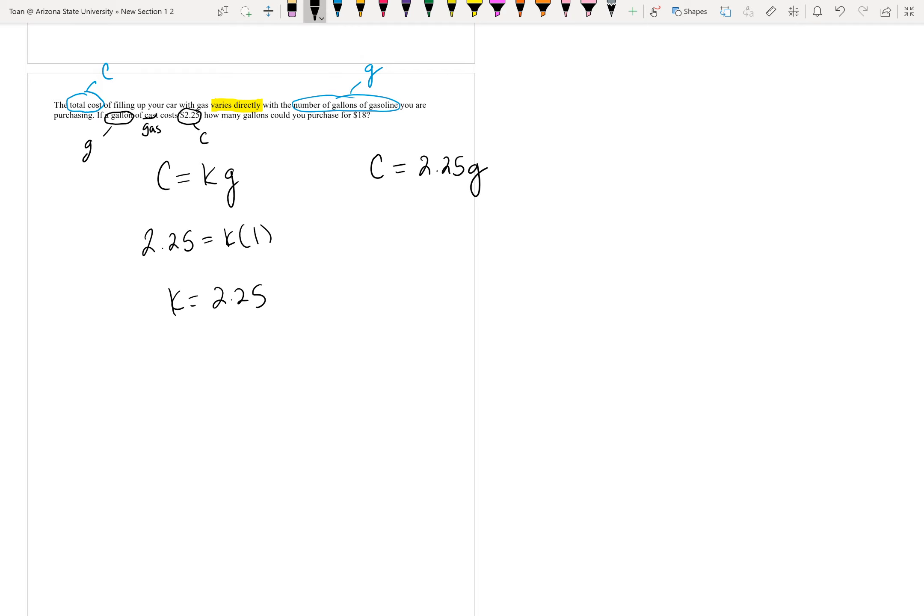Then we can go ahead and keep reading the question. If we keep reading the question, it says, how many gallons could you purchase with $18? Well, that's numerical. $18, we only have two variables. Is $18 a cost, or is $18 a gallons? Well, I hope it's very obvious that $18 is a cost, so we'll put that in the c location. There you go. Once you have that, it's just basic solving. So to solve for number of gallons, you just divide both sides by, in this case, 2.25. So 18 divided by 2.25 gives us 8 gallons.